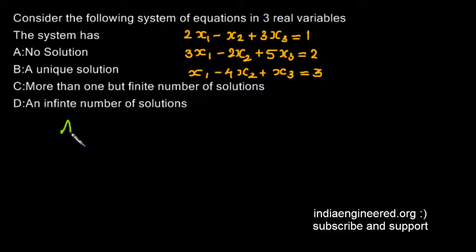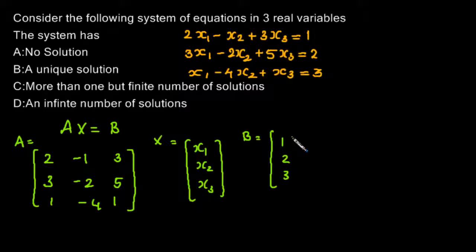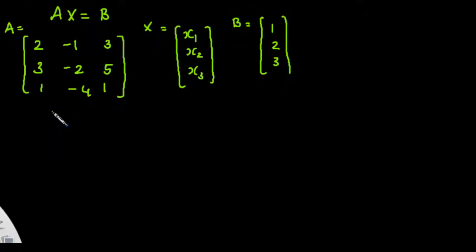We will solve this using the matrix method. We will rewrite these equations in the form of a matrix relation. Matrix A contains the coefficients: 2, -1, 3; 3, -2, 5; and 1, -4, 1. Matrix X contains the unknowns X1, X2, X3, and matrix B contains 1, 2, 3.